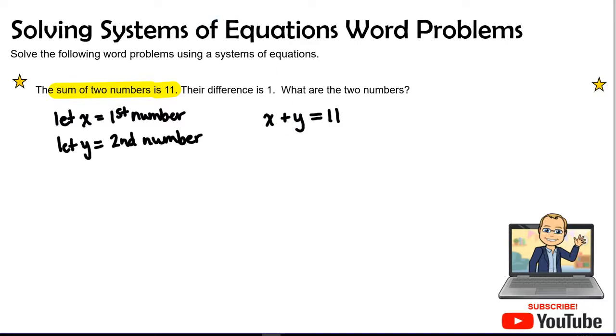Now the second equation, if I go back and bring my highlighter back out, their difference. So if I subtract them, the difference is going to equal one. So here I go. So we're going to say X, my first number, minus my second number, is going to equal one.